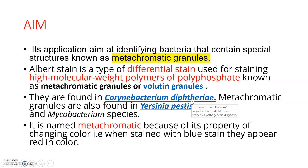In the case of Albert staining, its main application is identifying bacteria that contain special structures known as metachromatic granules. Albert stain is a type of differential stain used for staining high molecular weight polymers of polyphosphate. These metachromatic granules are high molecular weight polymers of polyphosphate, and they are also known as volutin granules.